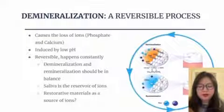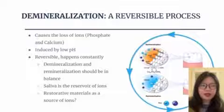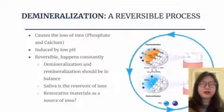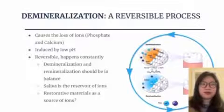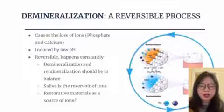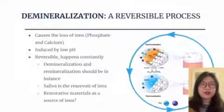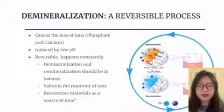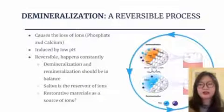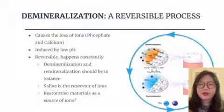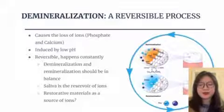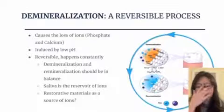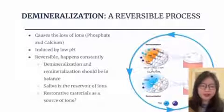In modern restorative material manufacturing, people are thinking about whether we can make restorative material a source of those ions. If we have a large amount of ions in those materials, it can add more to the right side of the equation and sort of push back on the demineralization process and help fight it.